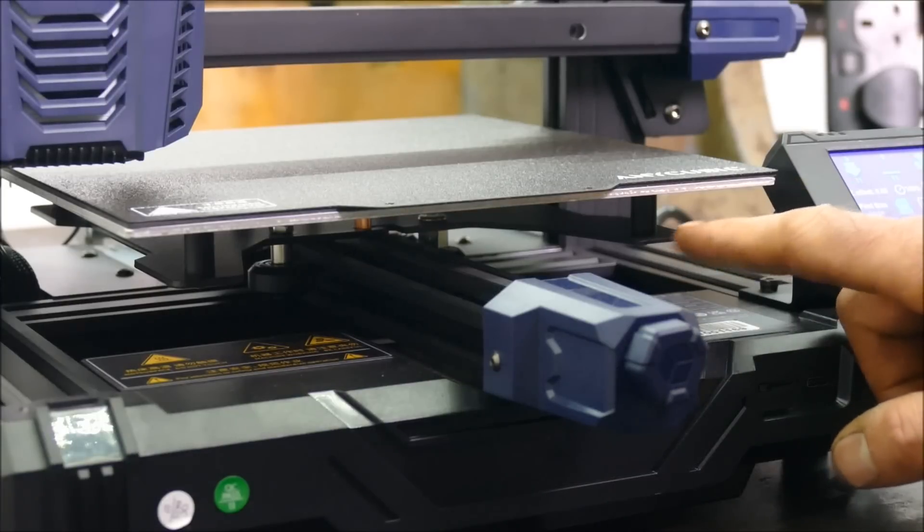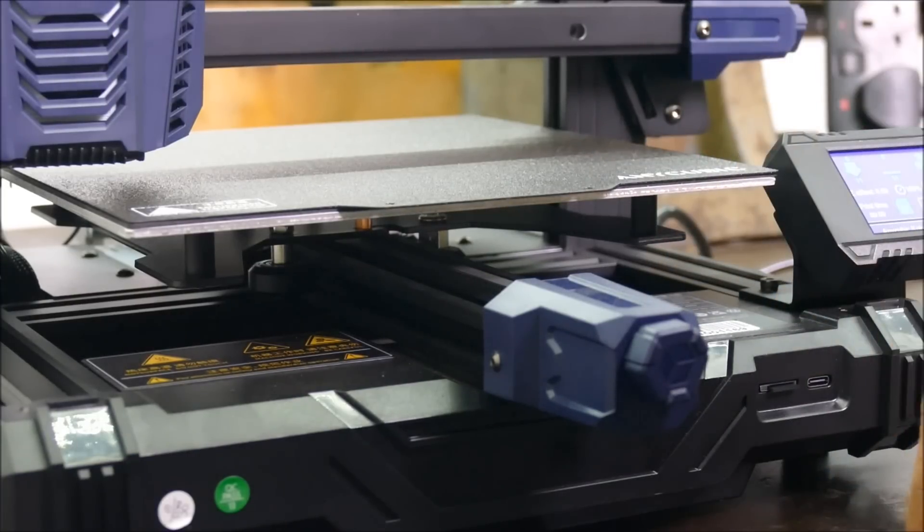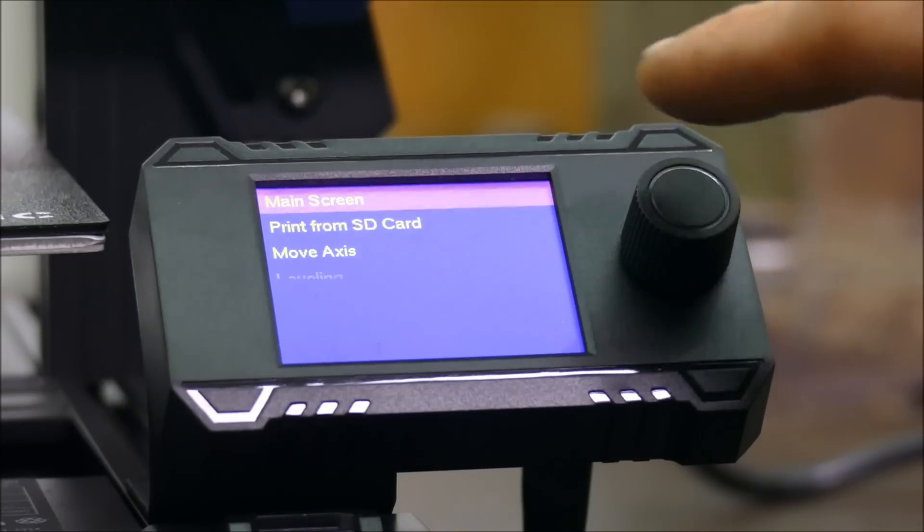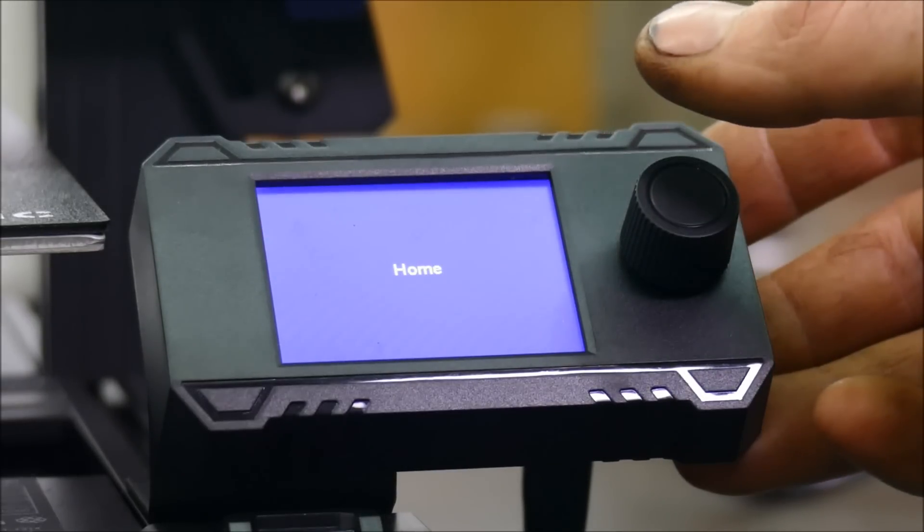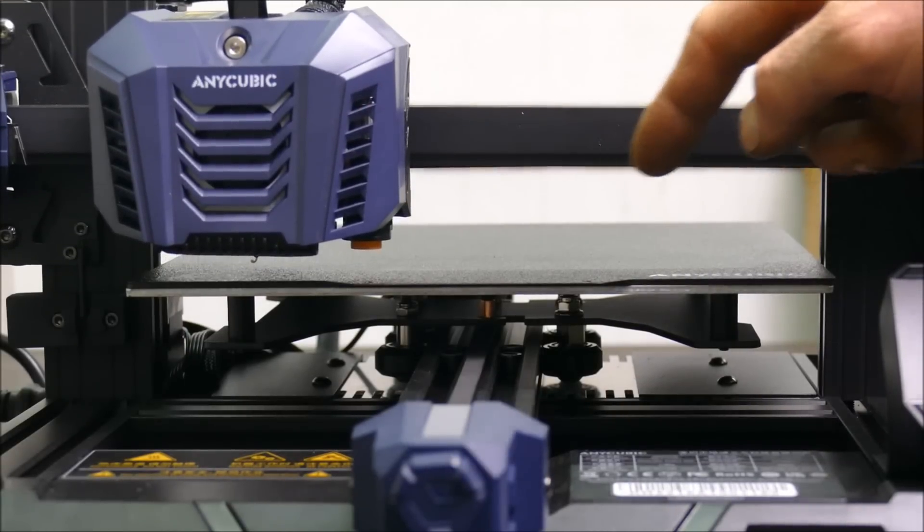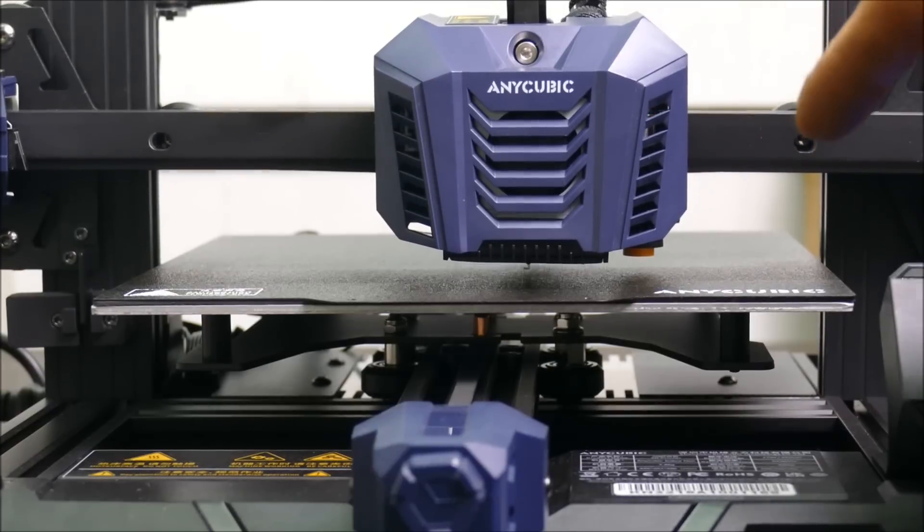You'll also notice there are no adjustment screws for leveling the bed. That's because it's completely automated. So if I press the button and turn it to leveling, then click auto leveling. As you can see, there's a little proximity sensor. Basically, if there's any differences in the height, it'll compensate for it in the G-code.